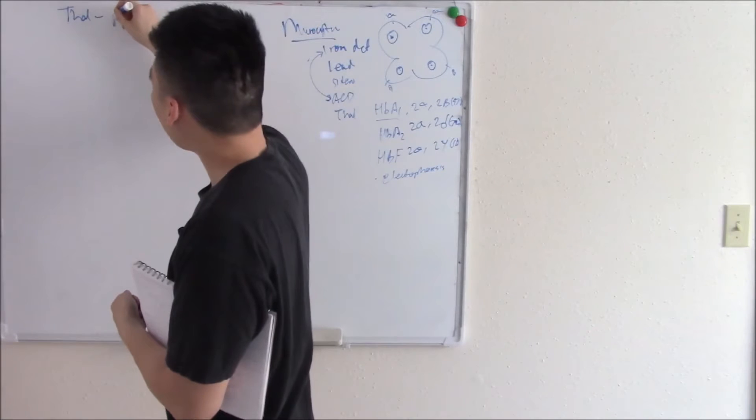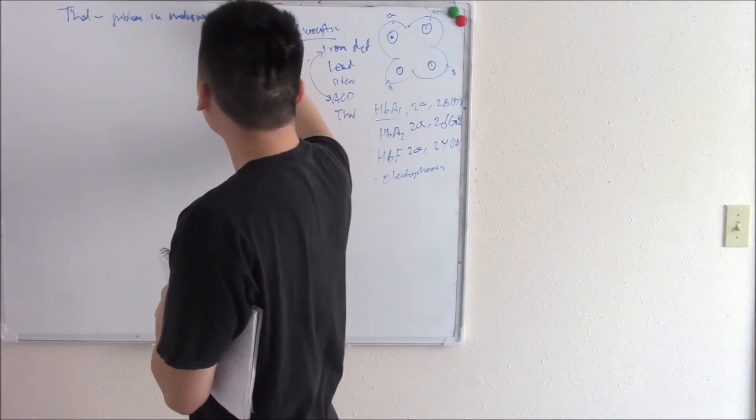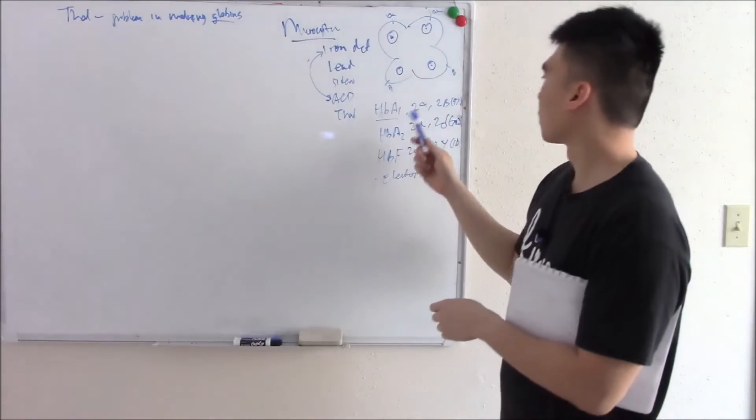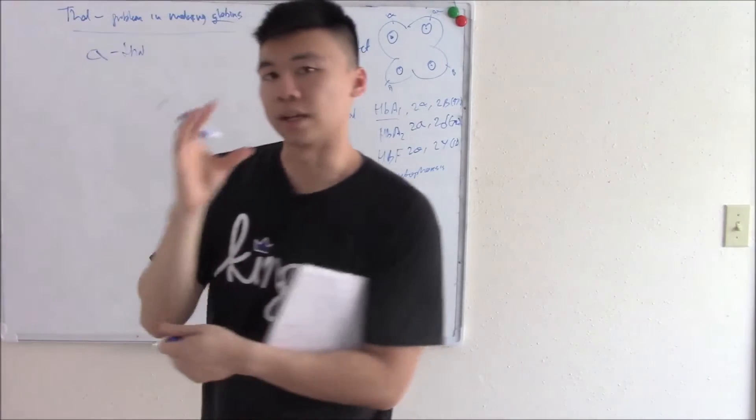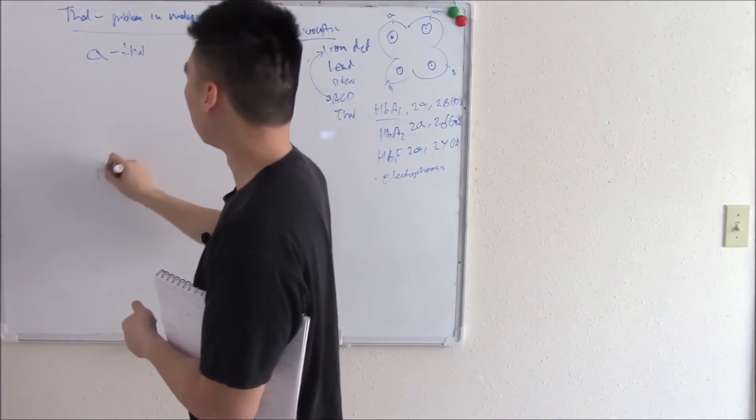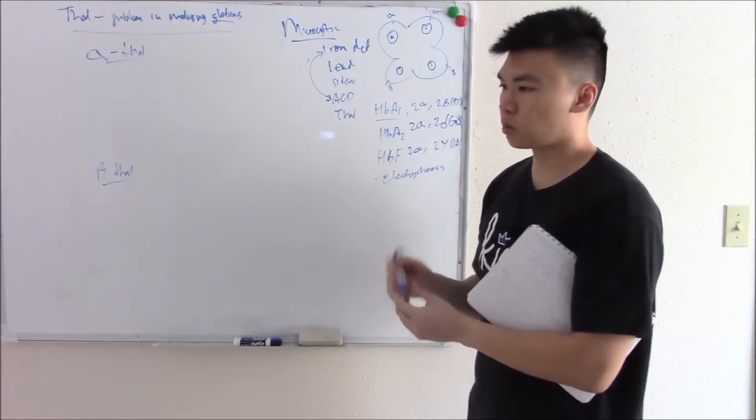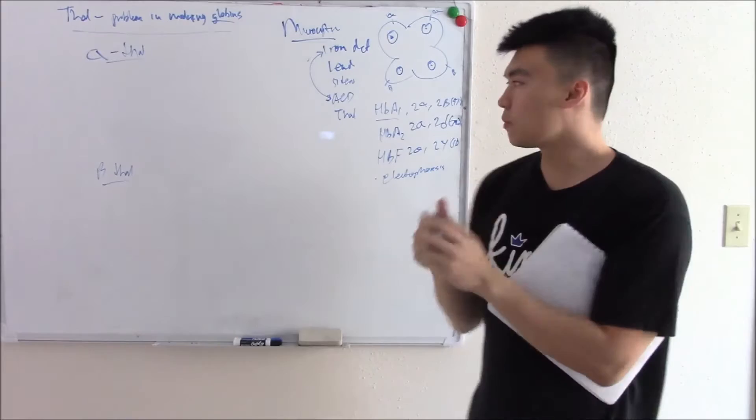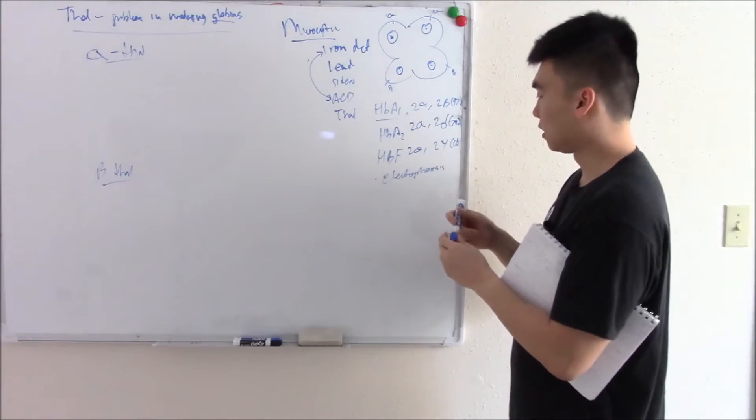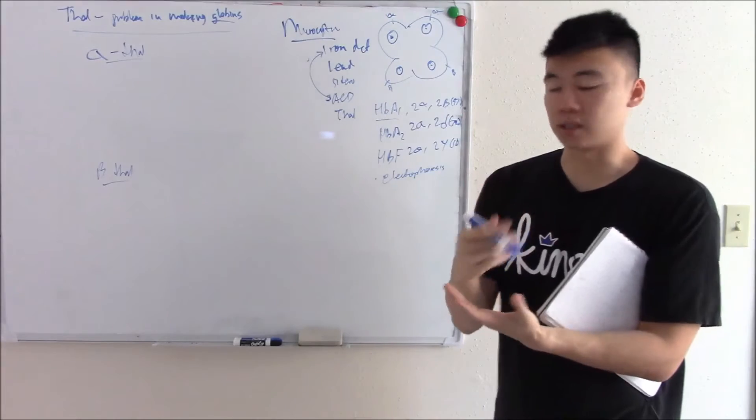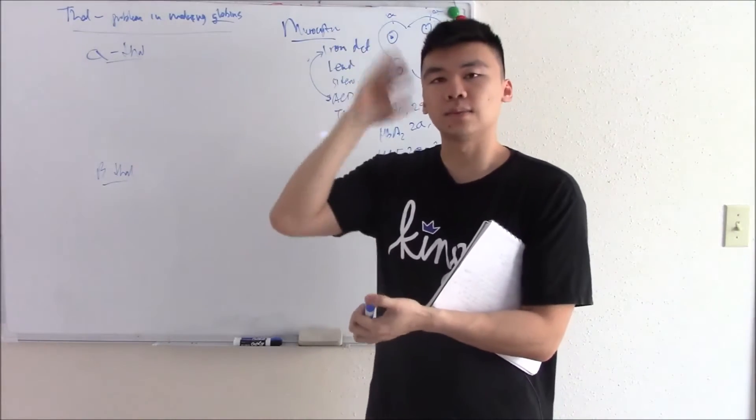Thalassemias is a problem in making globins. And as adults we have mainly 2-alpha, 2-betas. So we can subcategorize thal as alpha-thal, problem in making alpha globin, or beta-thal, problem in making the beta globin. But before I get into that, I just want you to know a general rule. If you have a problem making one of the types of globins, the other globin will increase and try and compensate for that.